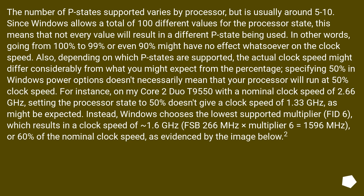The number of P states supported varies by processor, but is usually around 5 to 10. Since Windows allows a total of 100 different values for the processor state, not every value will result in a different P state being used. In other words, going from 100% to 99% or even 90% might have no effect whatsoever on the clock speed.